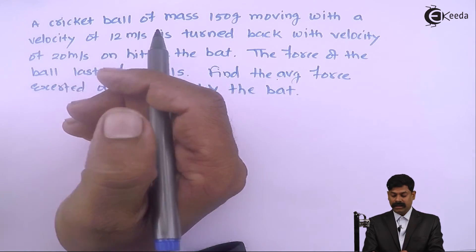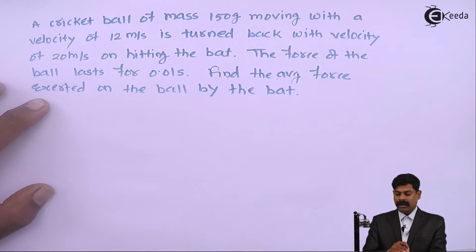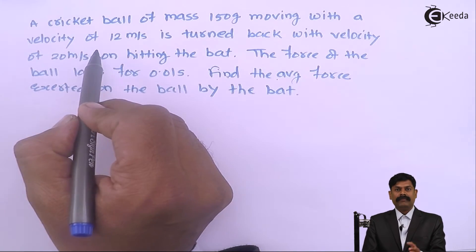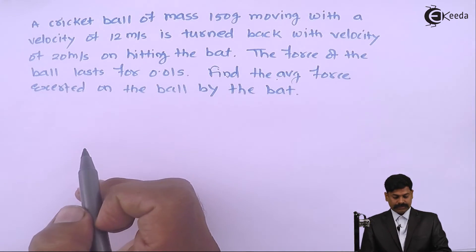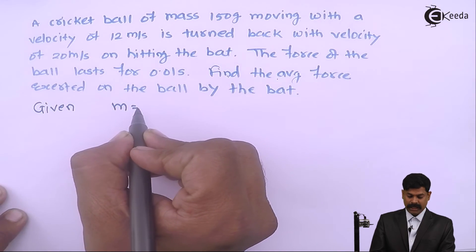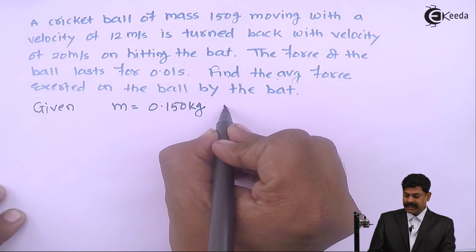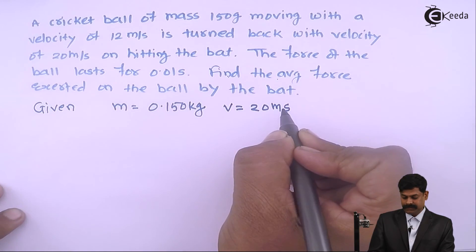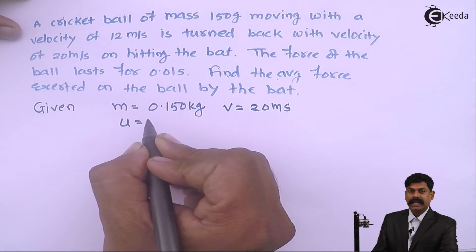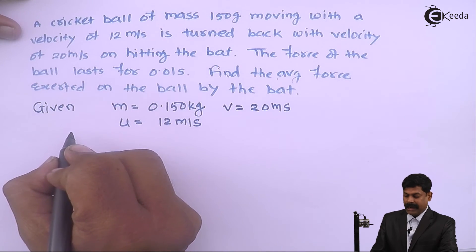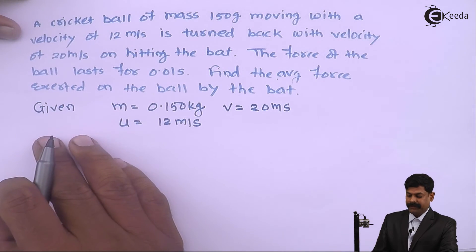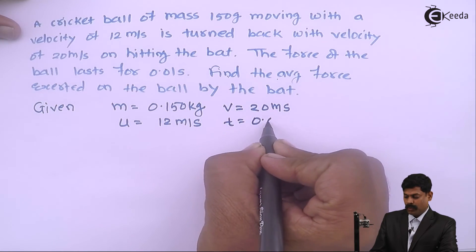When a cricket ball strikes the bat, we have to calculate how much force is exerted on the ball by the bat. Mass of the ball is 150 gram, which we convert to 0.150 kg. Initial velocity is 12 meter per second, final velocity is 20 meter per second, and time is 0.01 second.